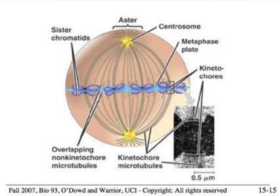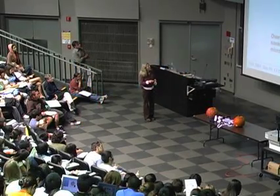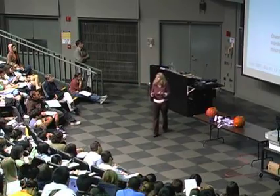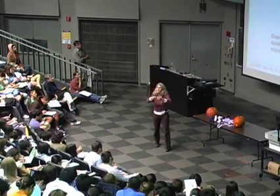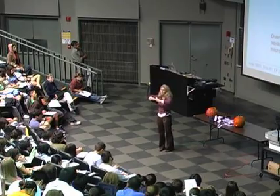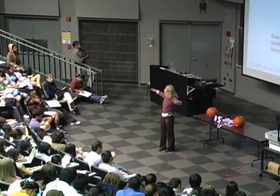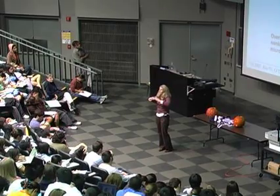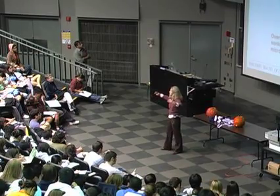These then move in that direction, and these move in this direction. The overlapping non-kinetochore microtubules are also very important for cell division because they continue to add subunits at the plus end. As you add subunits at the plus end, you extend the cell, making it get longer in preparation for cell division. So the non-kinetochore microtubules are important for elongating the cell in preparation for cell division.